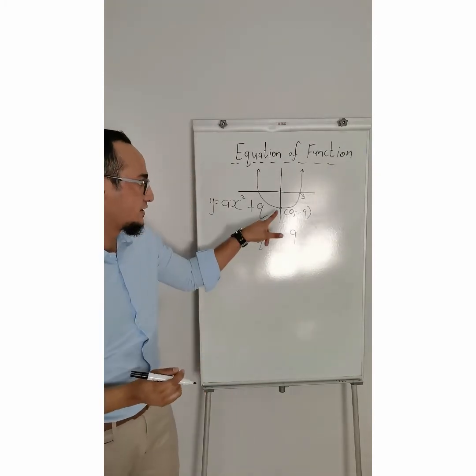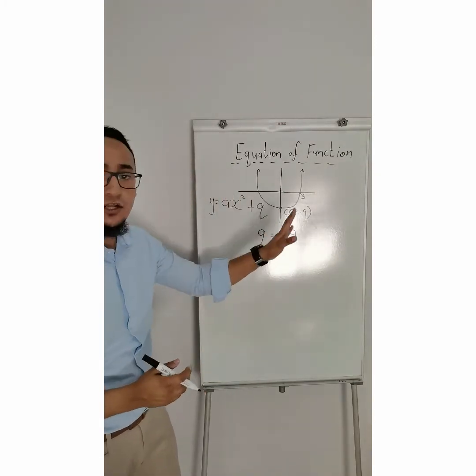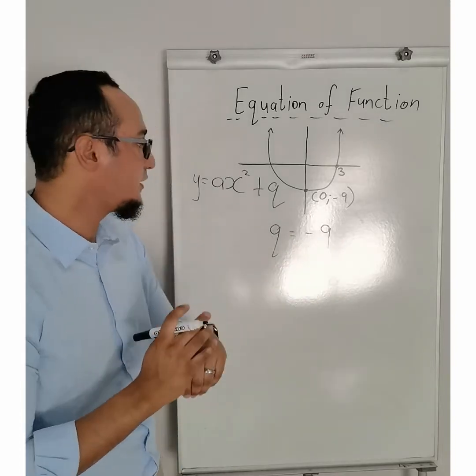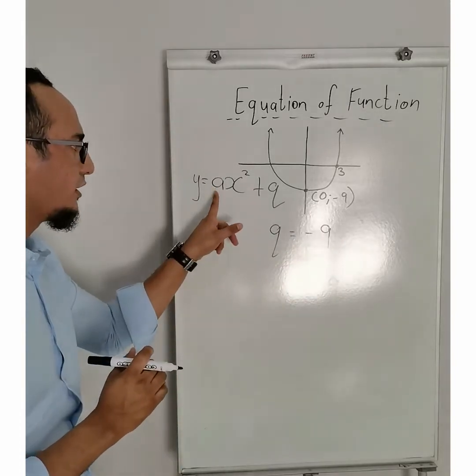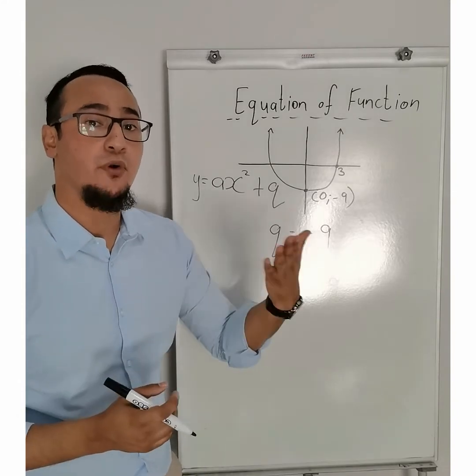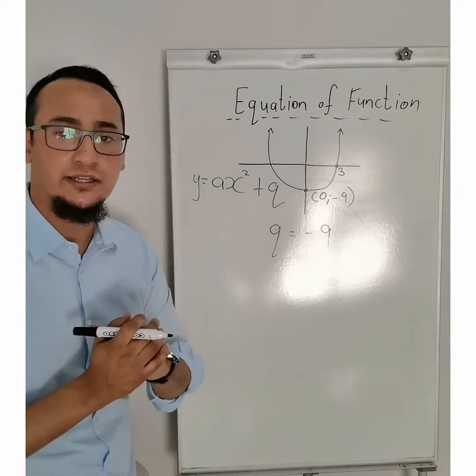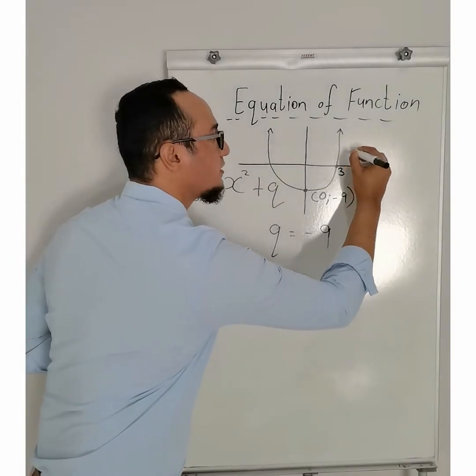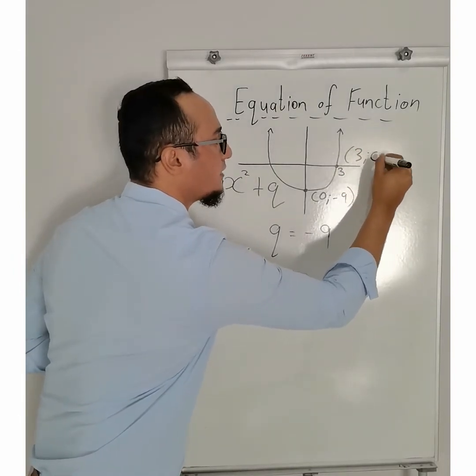and I can already say that q is equal to negative 9. Okay, which is that point, right? Negative 9, y-intercept. So, I have the value of q. I need to find the value of a, and with that, I'm going to substitute a point other than my y-intercept, and this will be 3 and 0.